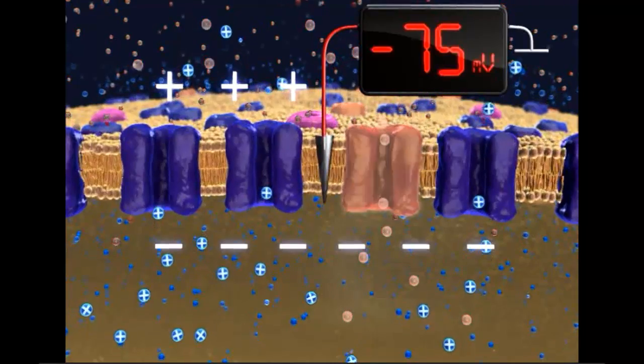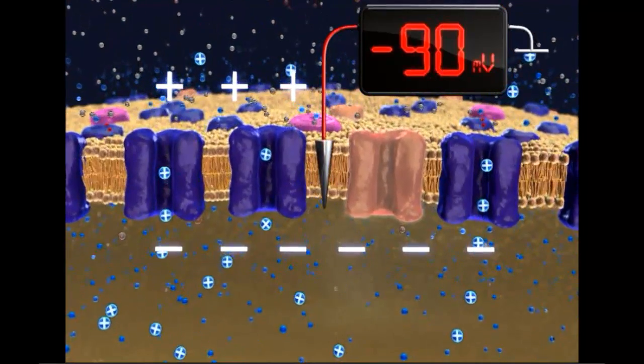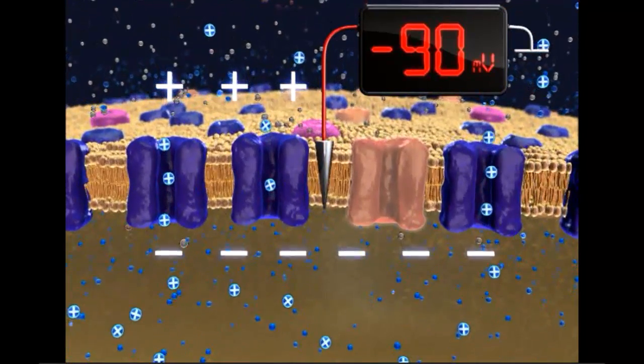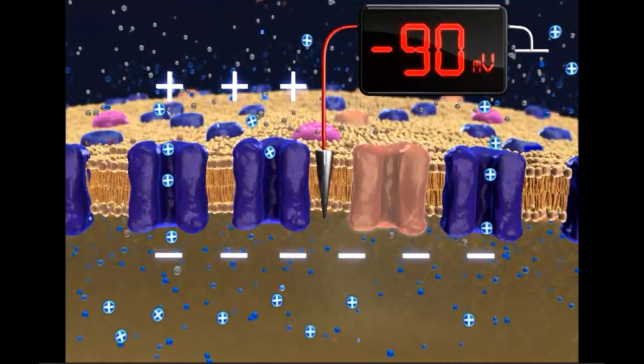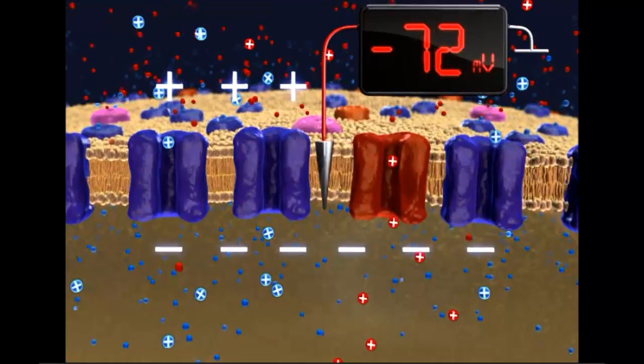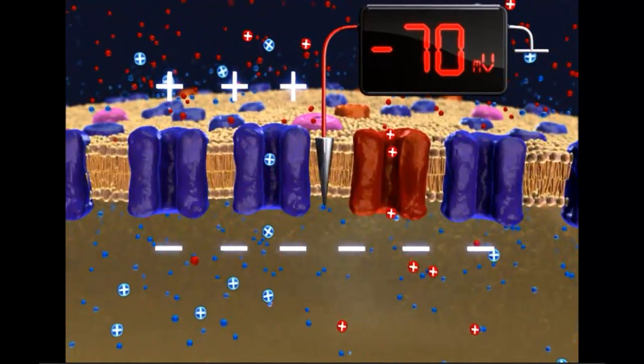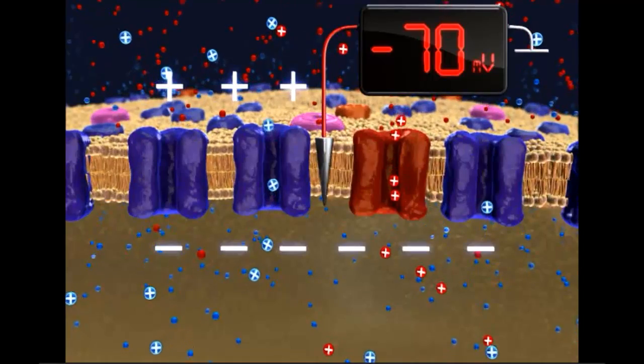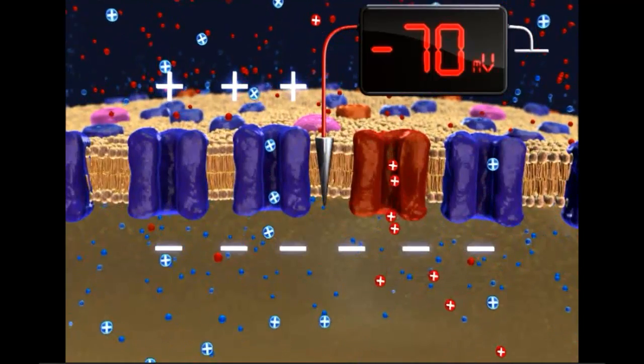If potassium was the only ion moving, the potential would stabilize at minus 90 millivolts. However, positively charged sodium ions leak into the neuron, which slightly offsets the negative charge and raises the voltmeter reading to minus 70 millivolts.